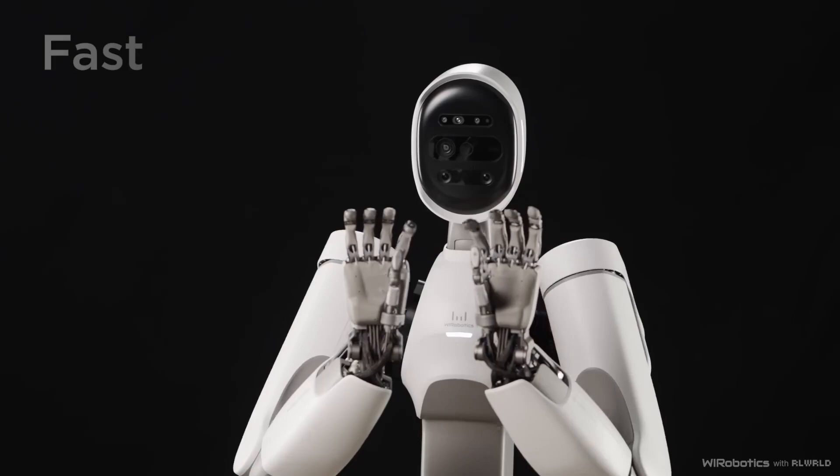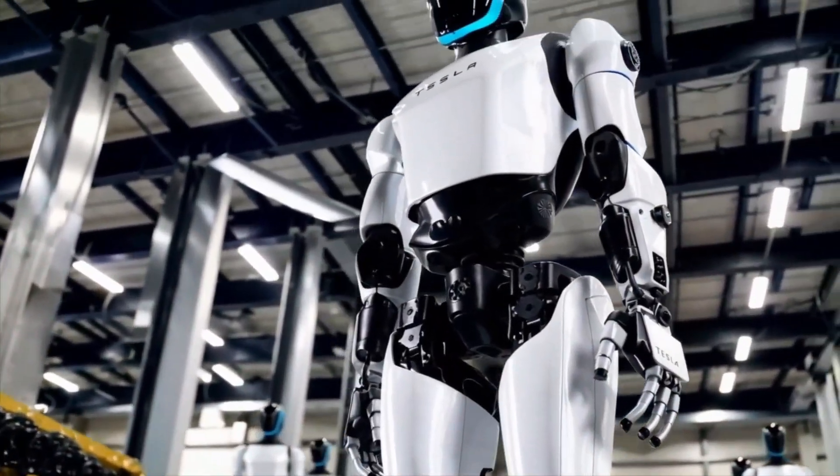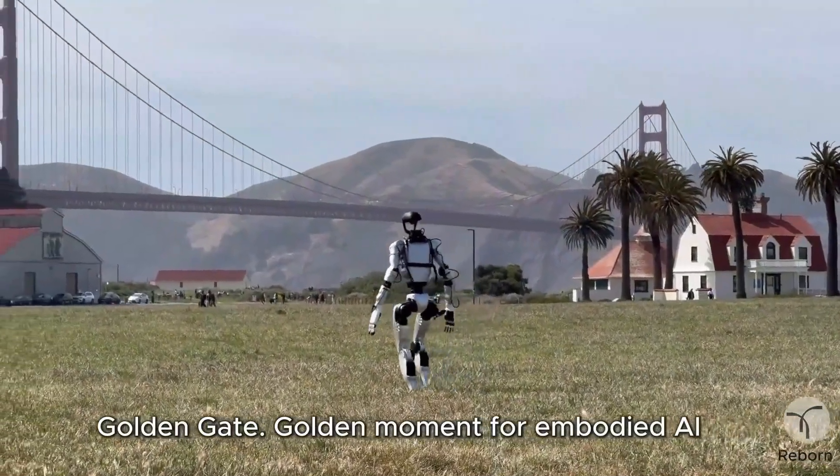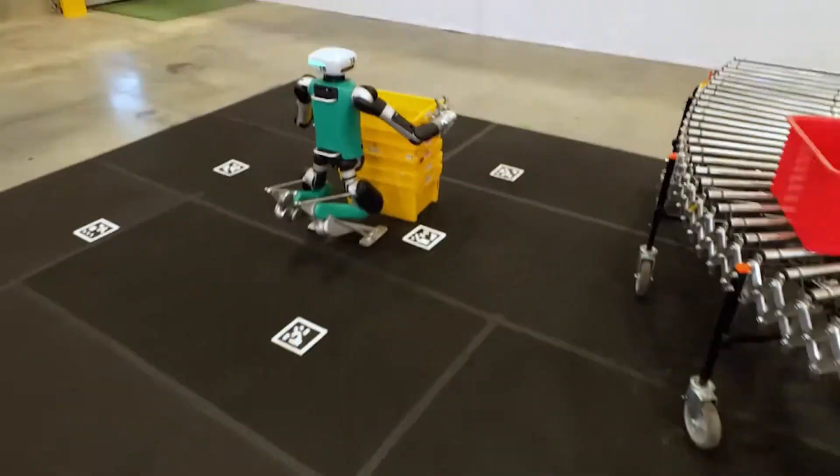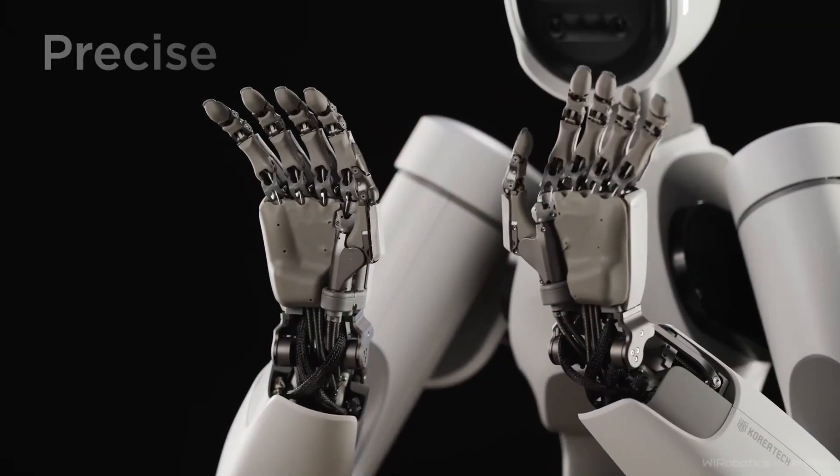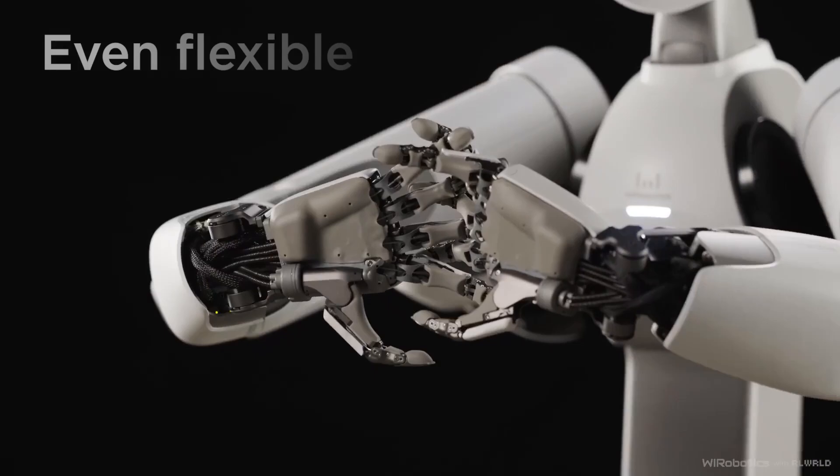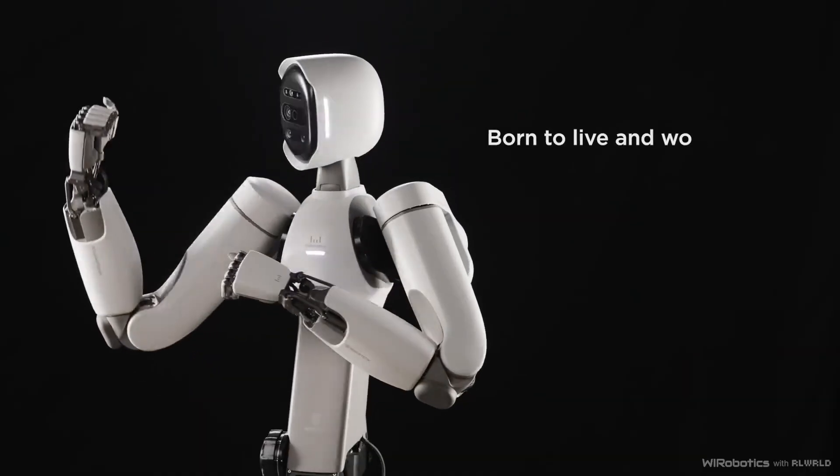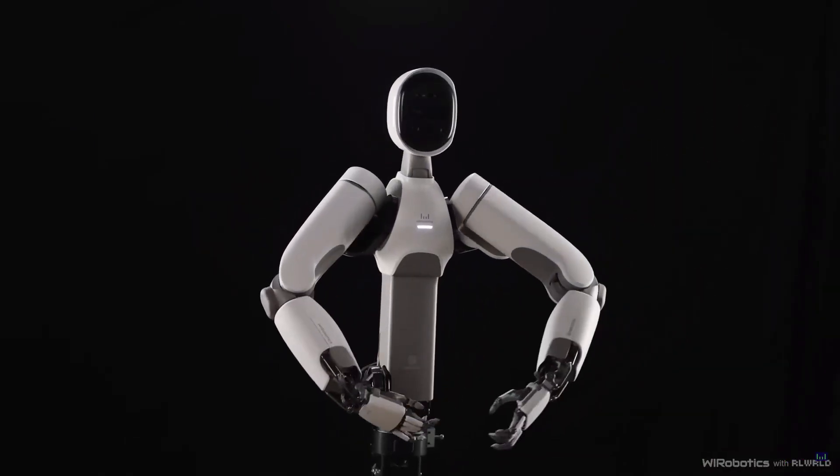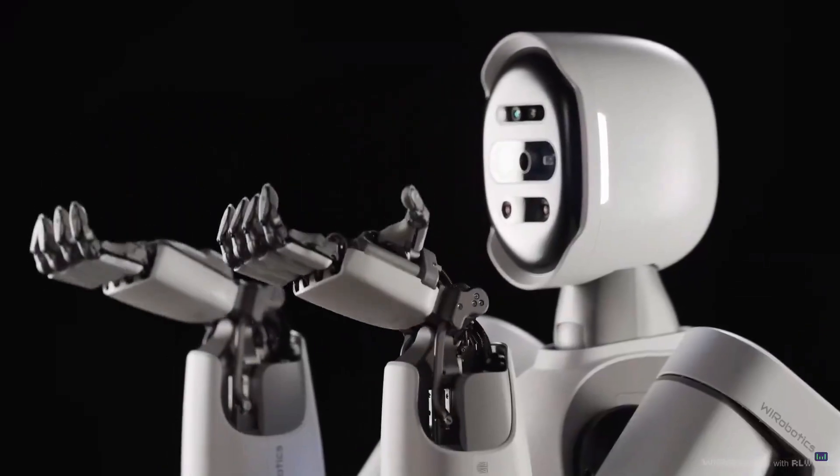Another factor is competition. WI Robotics is not alone in this race. Companies like Tesla with Optimus, Figure AI with Figure 2, Unitree with H1, and Agility Robotics with Digit are all pushing humanoid robotics forward in different directions. What sets Alex apart is its focus on the hands. But in the broader humanoid race, integration matters too. If competitors can match or surpass this precision while also offering better mobility, scalability, or price, then Alex will have to keep innovating to stay ahead.